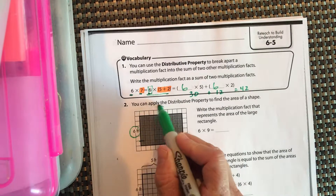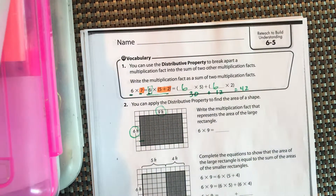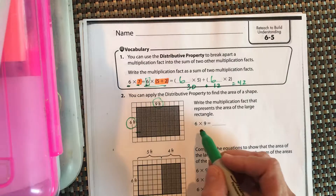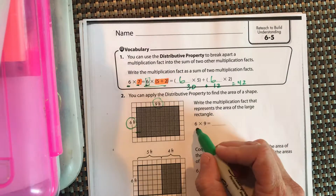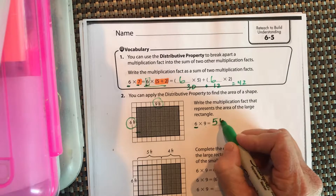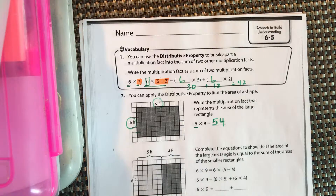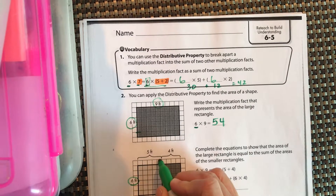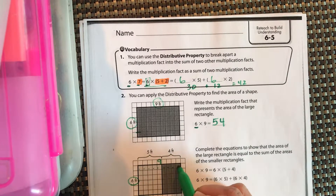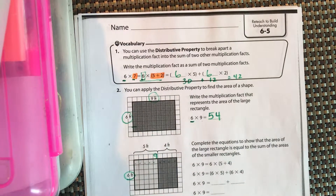We want to do six times nine. We know our nines trick — we're multiplying by six so it's fifty-something, and five plus four is nine, so six times nine is 54. Here we have the same problem: six across, with one, two, three, four, five on one side and one, two, three, four on the other, totaling nine.